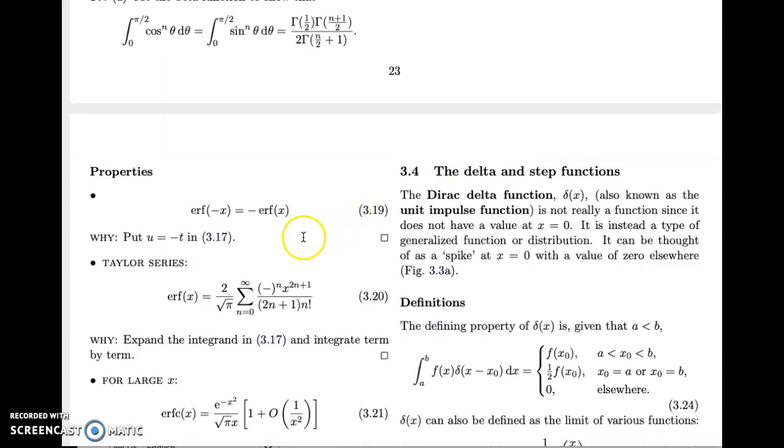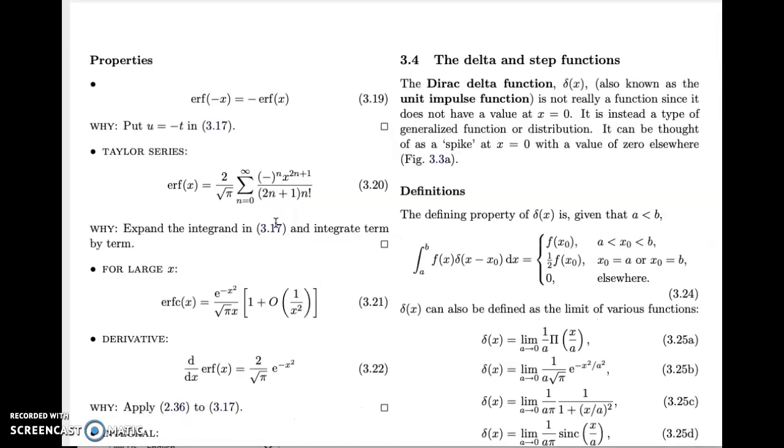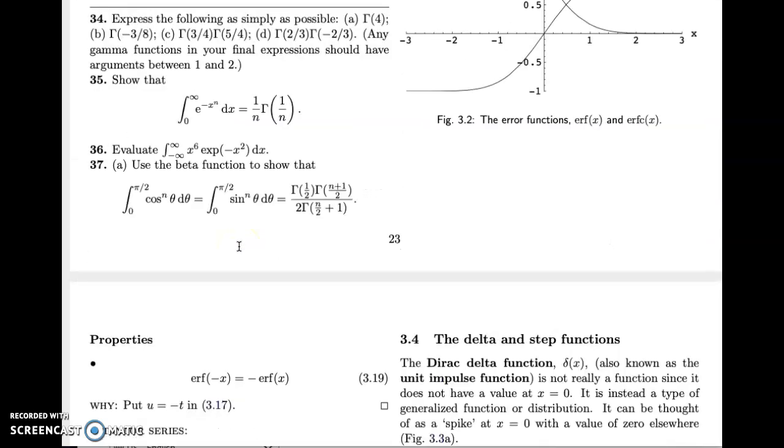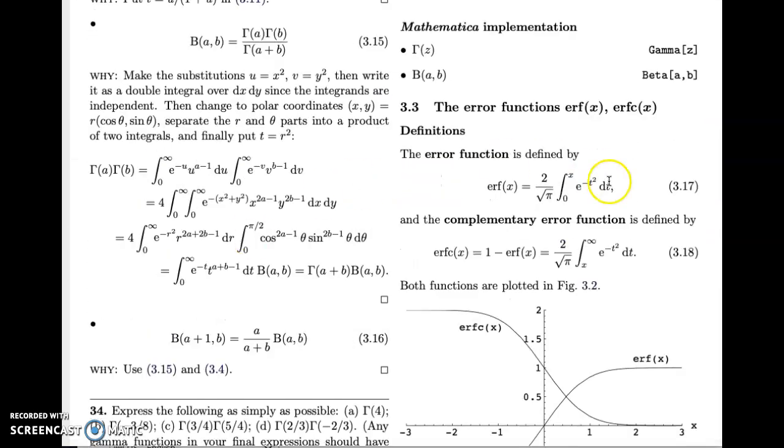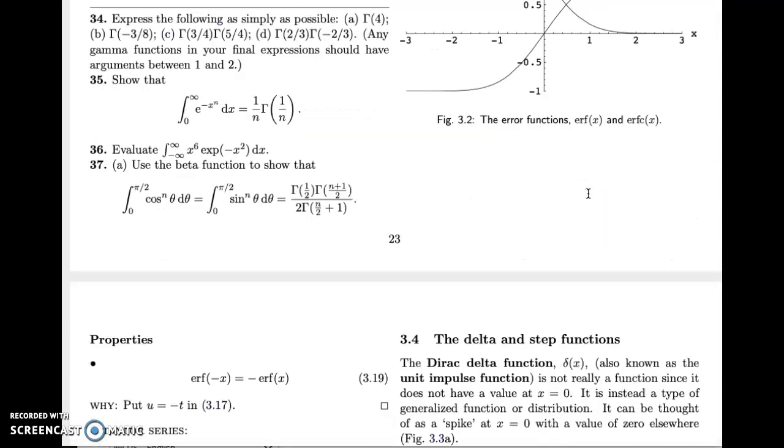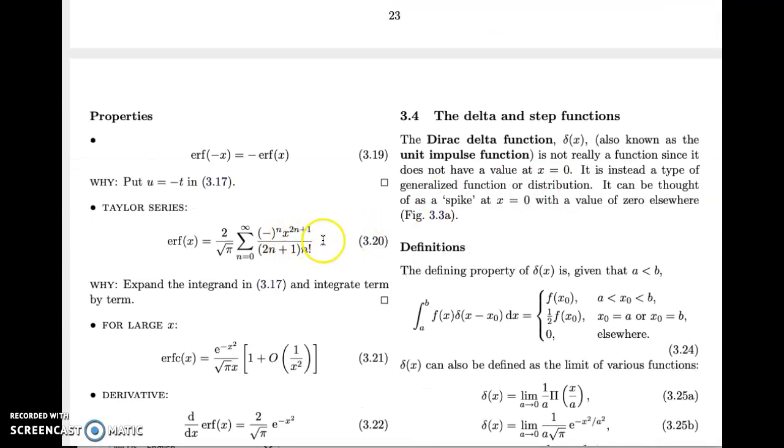So as we just said, erf is an odd function. I'll just mention the Taylor series. You can actually prove it by expanding the integrand in the definition. Just write e to the minus t squared as 1 minus t squared plus and so on, the series for e to the x with minus t substituted. Integrate term by term and you end up with this series here.